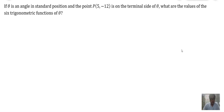We have another example here. If theta is an angle in standard position and the point P with coordinates 5 and negative 12 is on the terminal side of theta, what are the values of the six trigonometric functions of theta? So to answer this one, let us draw and look at the graph of theta.